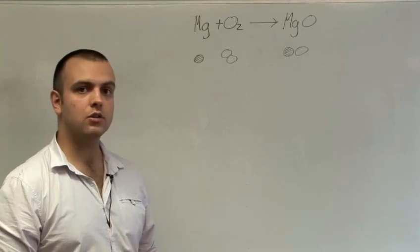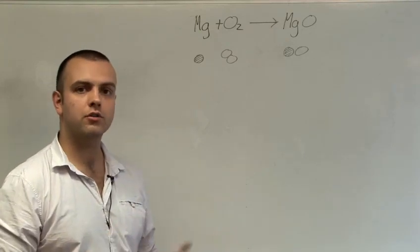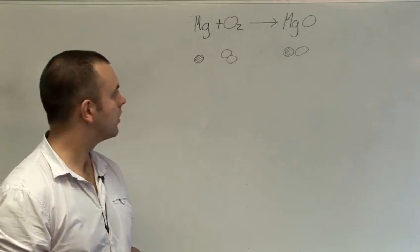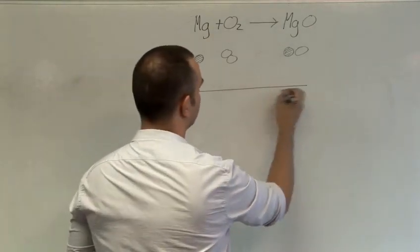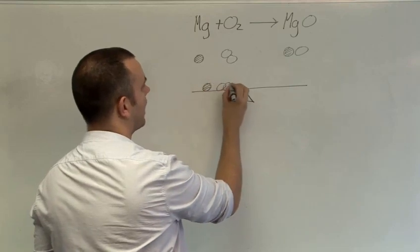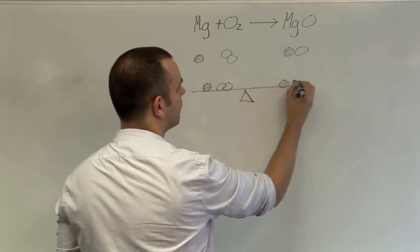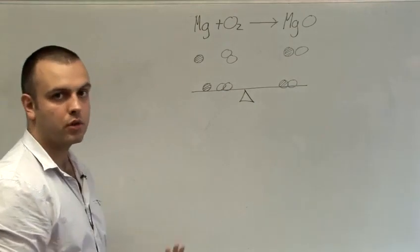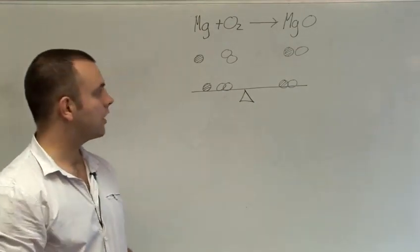Atoms cannot be created or destroyed, they can only change partners, form new bonds or break old ones. If we think of the example of a set of scales, the scales have to balance what was before the reaction, the reagents, and what's after the reaction, the products.